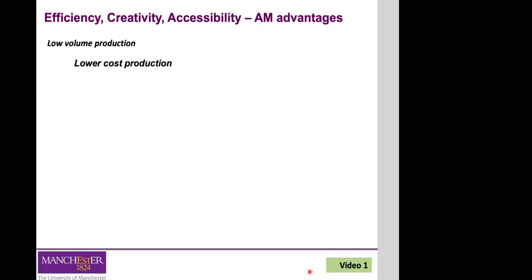Another important advantage is lower cost production compared to traditional manufacturing. In traditional manufacturing you have to generate tools — a mold for casting or injection molding, or tools to machine parts — which adds extra costs. 3D printing doesn't require the creation of any additional tools; it's just the materials and the labor involved in production.